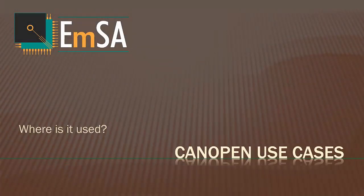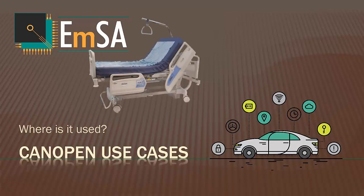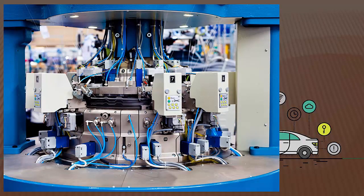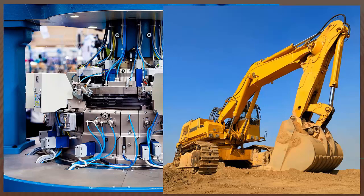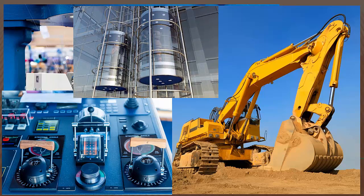Coming from the automotive arena, CAN quickly got adopted by many different application fields simply because CAN controllers were deeply integrated into almost every microcontroller family available. Today you can find CANopen in medical applications and hospital beds, many industrial applications, and electrical motors and drives. Everything moving with electric motors and drives is one of the strongholds of CANopen applications — including construction machinery, cranes, forklifts, and similar devices. In maritime applications, we can even find safety-critical control elements. There's also a safety version of CANopen, and it appears in building automation, including a specific dedicated CANopen specification for elevator and lift control.